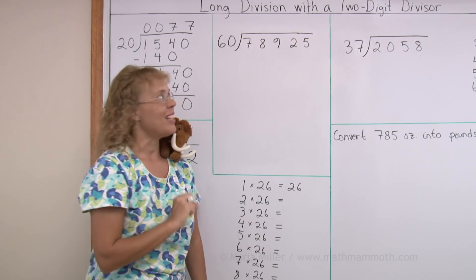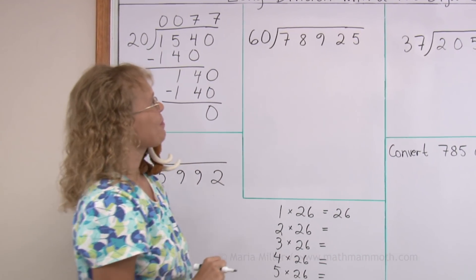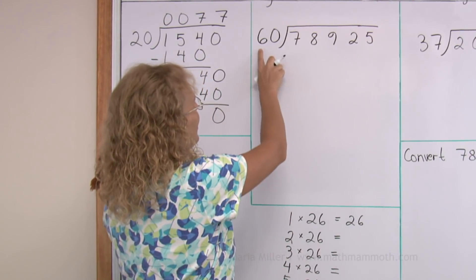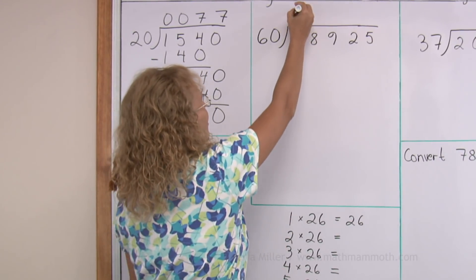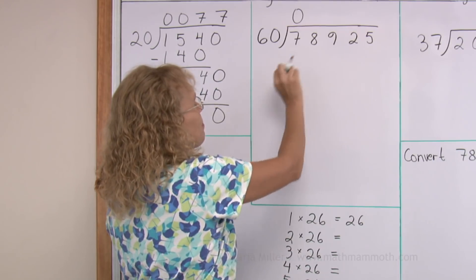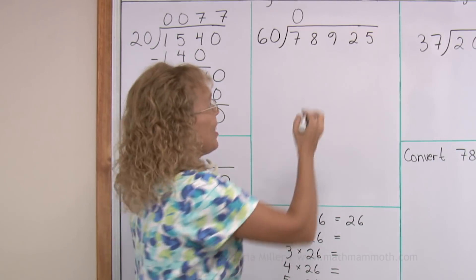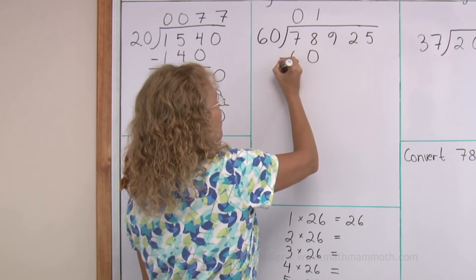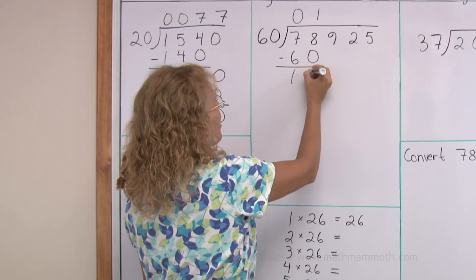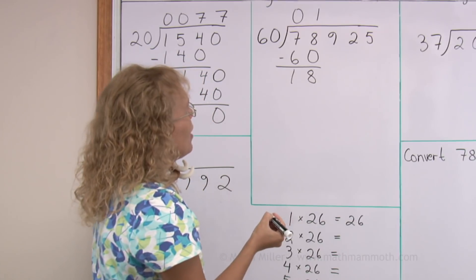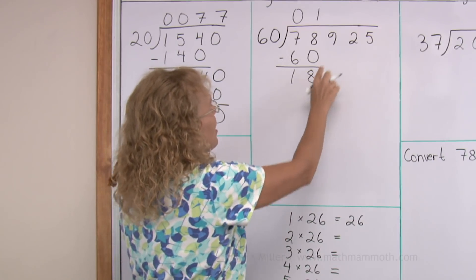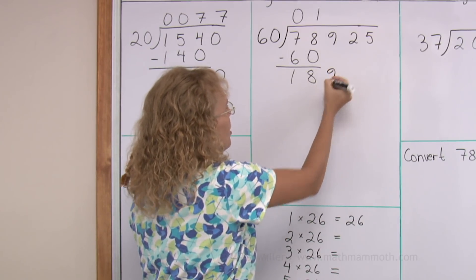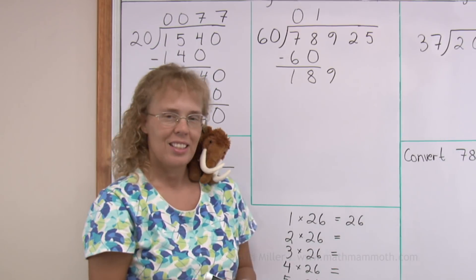Let's try it again. This time with 60. 60 goes into 7, 0 times. Then 78. Oh, that's easy. 1 times 60 is 60. Subtract. And we get 18 here. And of course, 60 does not go into 18, but we drop down one more digit.